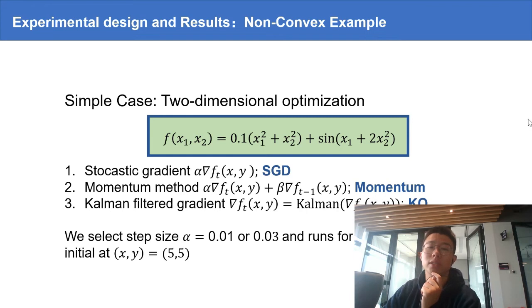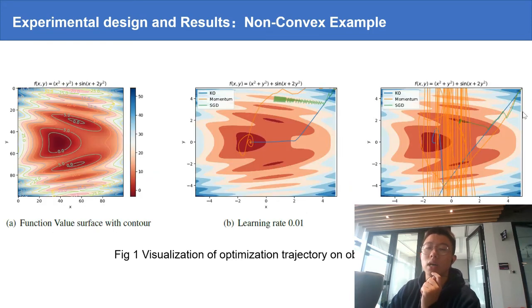We visualize the optimizer's optimization trajectory on the objective function. We see that for small step size, both the momentum method and Kalman Optimizer find the global minimum, but SGD fails in such a case.